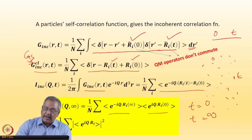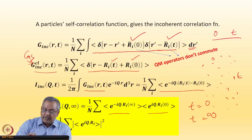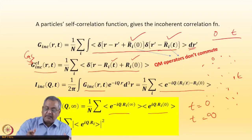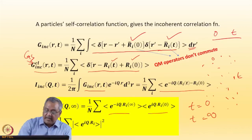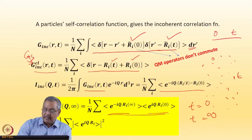Starting from the pair correlation function in real space, its Fourier transform gives the intermediate scattering function with an ensemble average. Treating these two positions as classical variables — not operators — I can average them independently. This becomes the ensemble average of e^(iq·r_i) at infinite time times the ensemble average of e^(-iq·r_i) at time zero, which is nothing but the modulus squared of the ensemble average of e^(iq·r_i): |⟨e^(iq·r_i)⟩|².